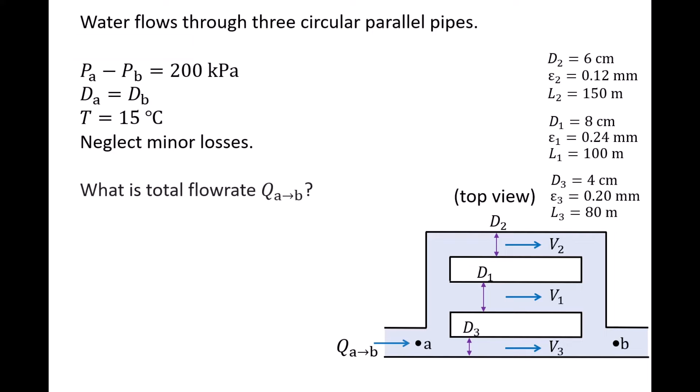Based on the given information, we want to calculate the total volumetric flow rate flowing through the system, QAB. QAB is found in the conservation of mass equation, which for a parallel pipe system is QAB equals Q1 plus Q2 plus Q3. The volumetric flow rate through each pipe is the flow speed V times the cross-sectional area pi over 4 times d squared. So QAB is equal to V1 times pi over 4 d squared plus V2 times pi over 4 d squared plus V3 times pi over 4 d squared.